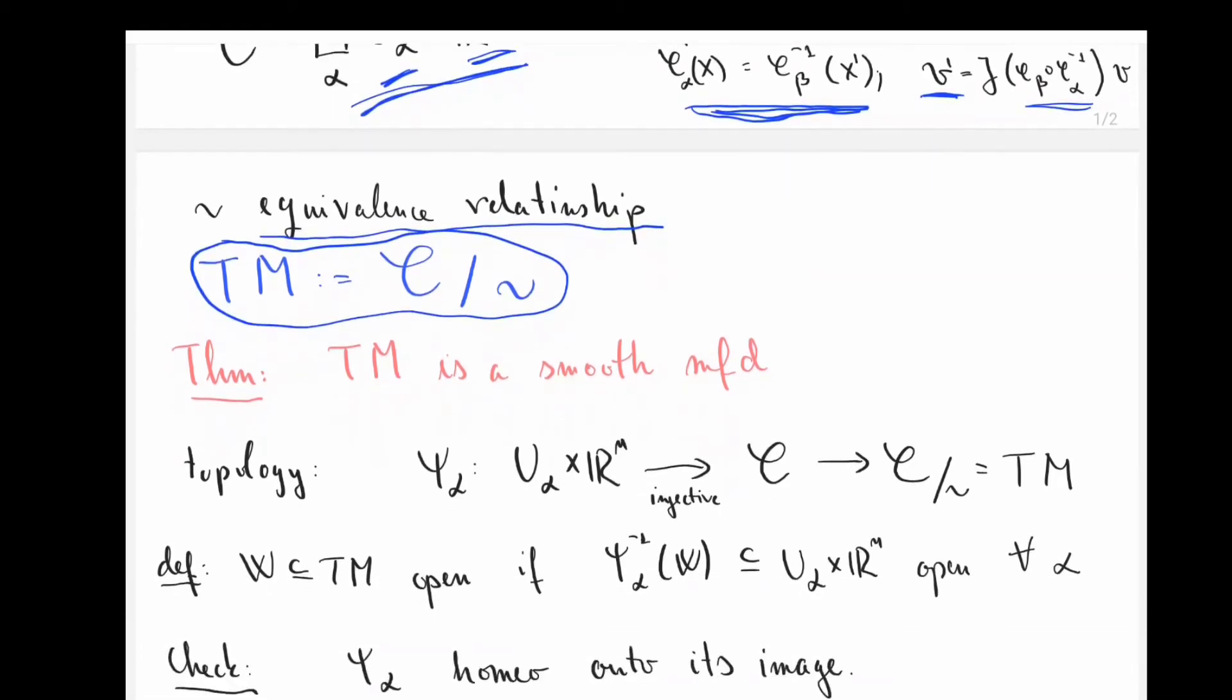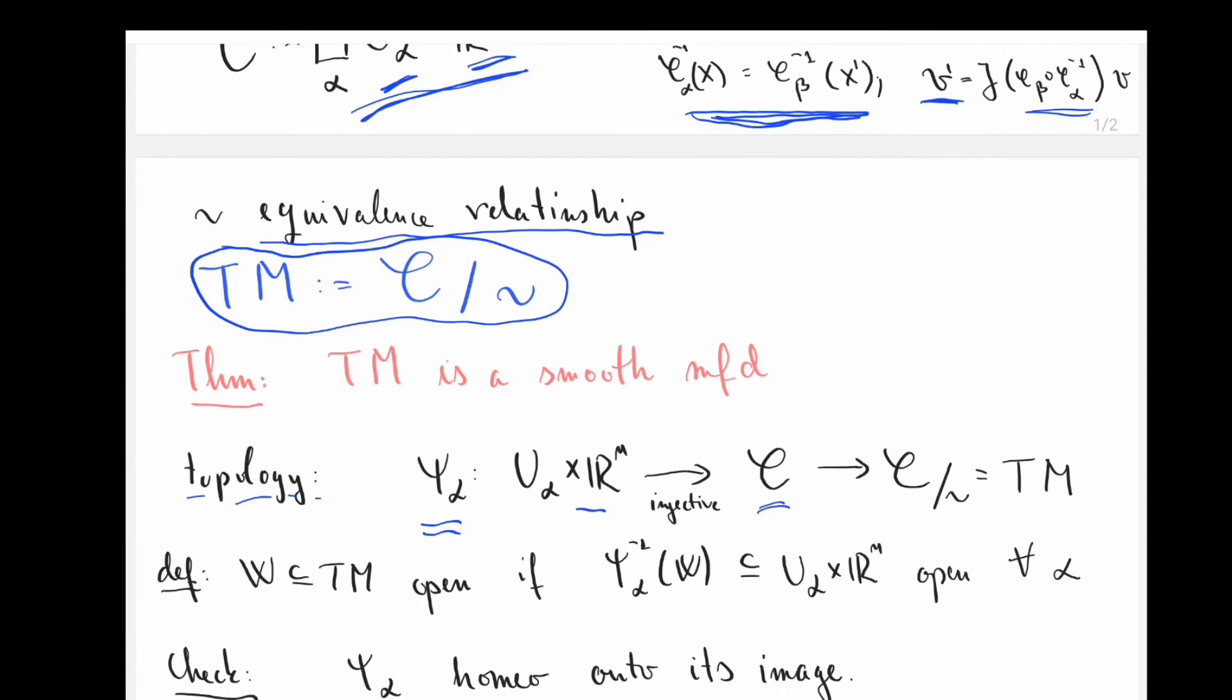And then the way you put a natural topology on the tangent bundle is by using these obvious maps that you have. So we have these maps psi alpha that are sort of injective maps of u alpha cross rn into this collection C. So C up here was nothing but this, and obviously there's a map from C to C quotient equivalence relationship, and that's TM.